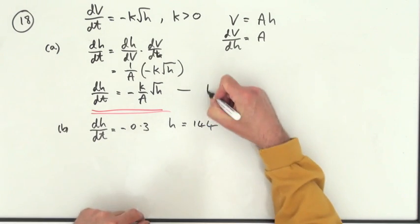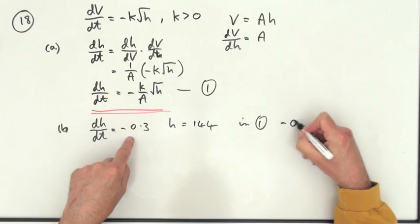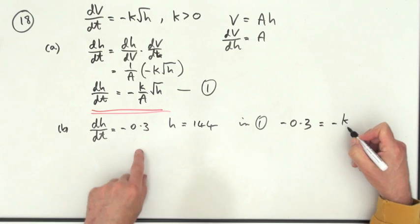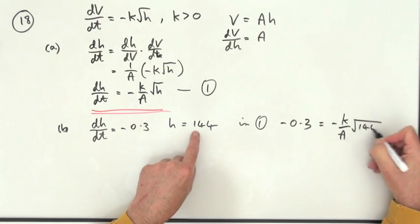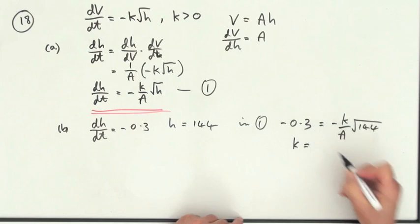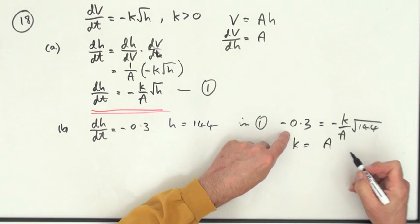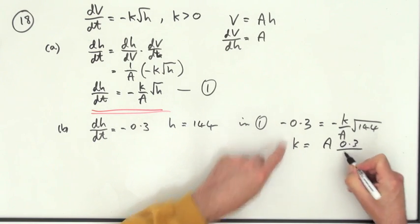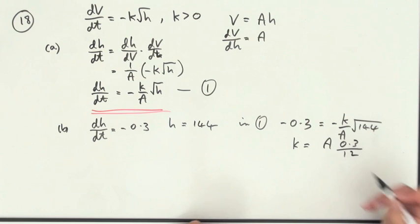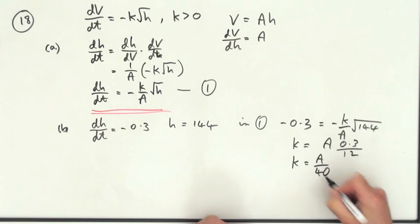So popping it into equation 1, we'll have dH by dT is negative 0.3, and that will equal negative K over A root 144, very conveniently. So K, take the K out. Negatives go, K would equal, A goes across, we've got 0.3 over 12. Well, 3 into 12 goes 4, so that's 1 over 40.